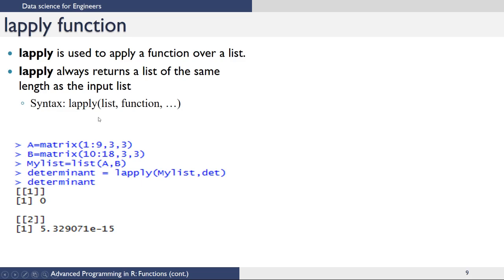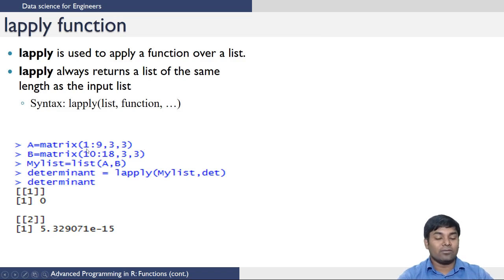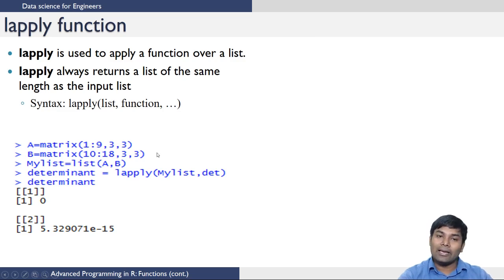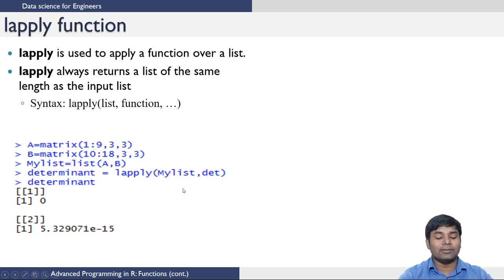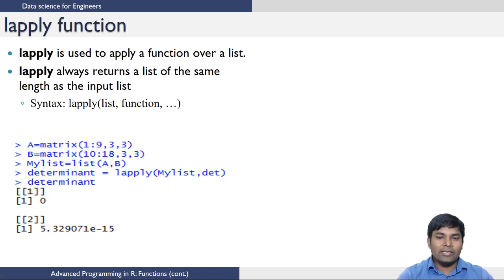Let us illustrate lapply with an example. Create matrix A with elements 1 to 9 in a 3 by 3 size, and matrix B with elements 10 to 18 in a 3 by 3 size. Now create a list of matrices A and B using the list command. We want to evaluate the determinant of each matrix. One way is to calculate the determinant of A, then of B, and combine them into a list. The same operation can be done easily using lapply as shown here.